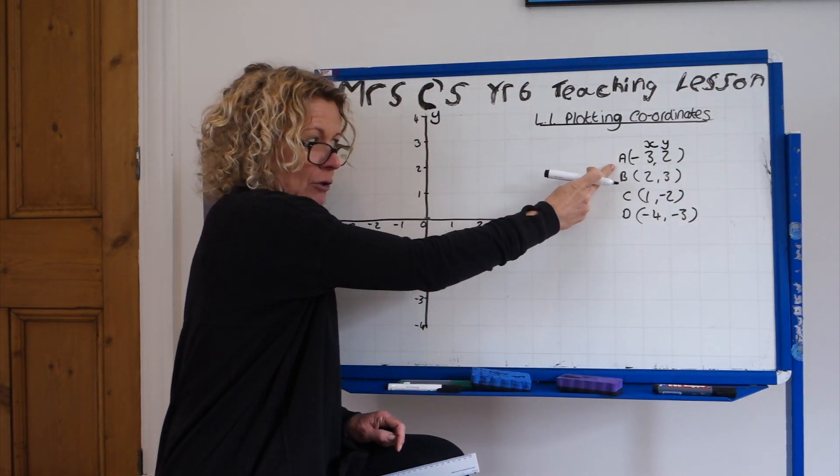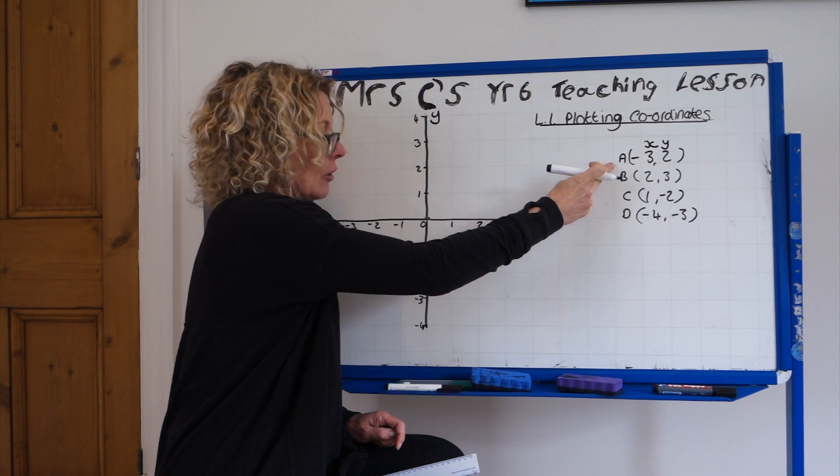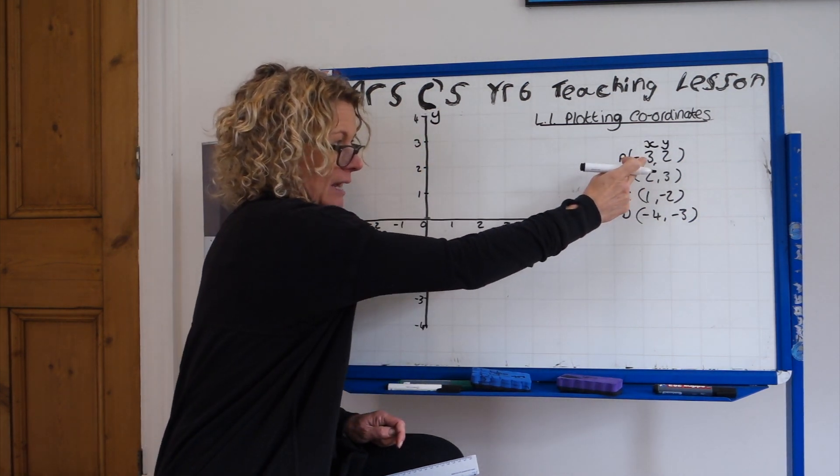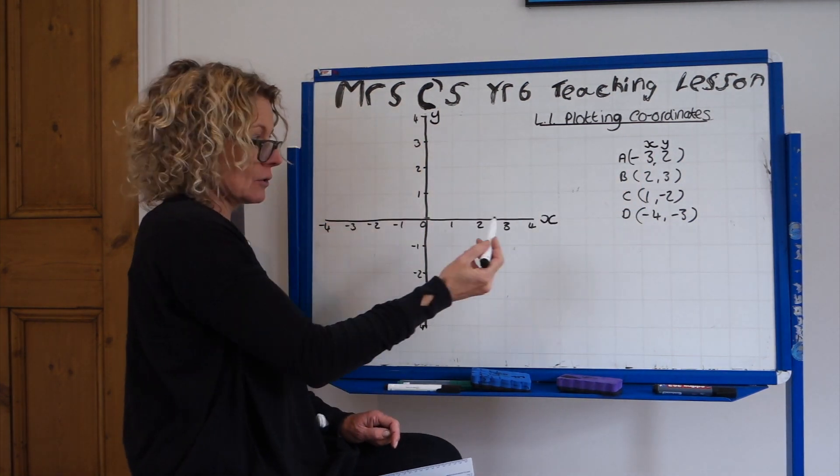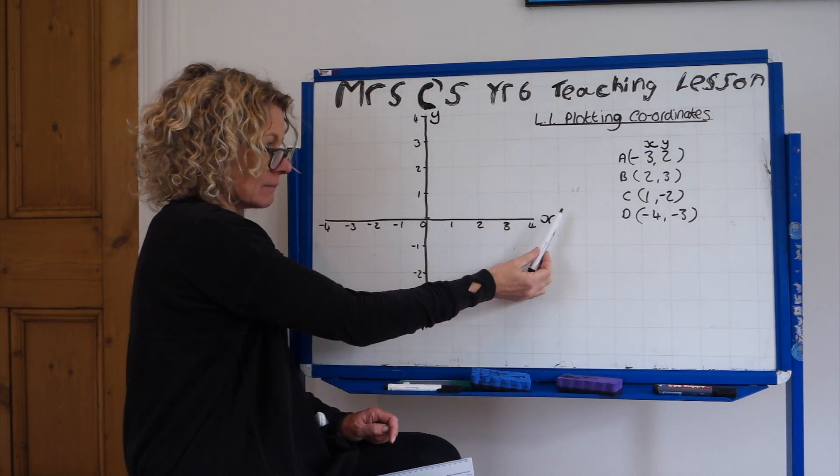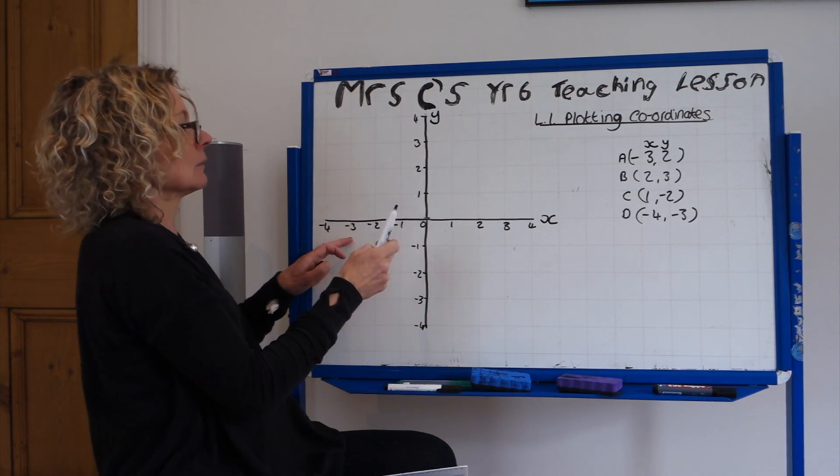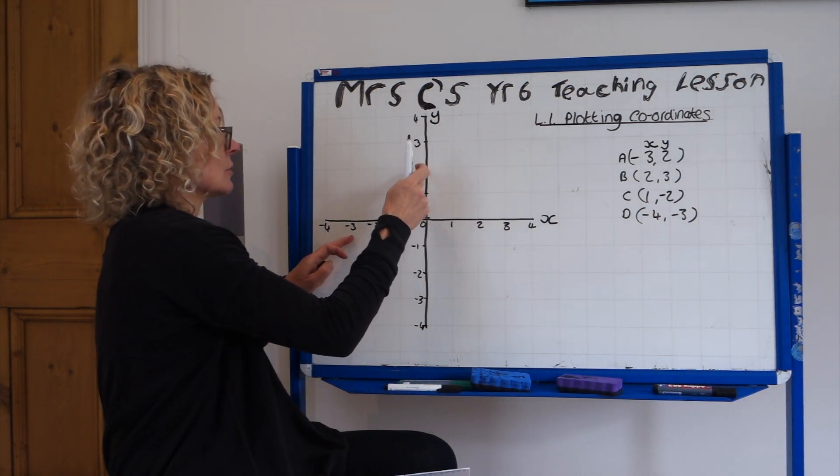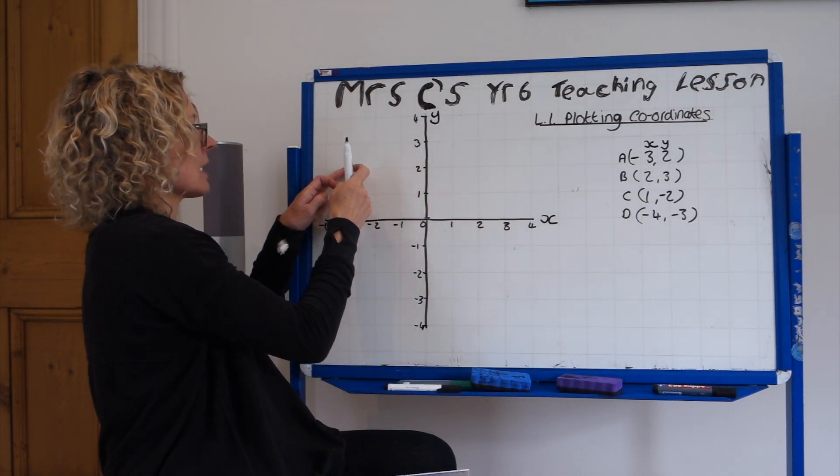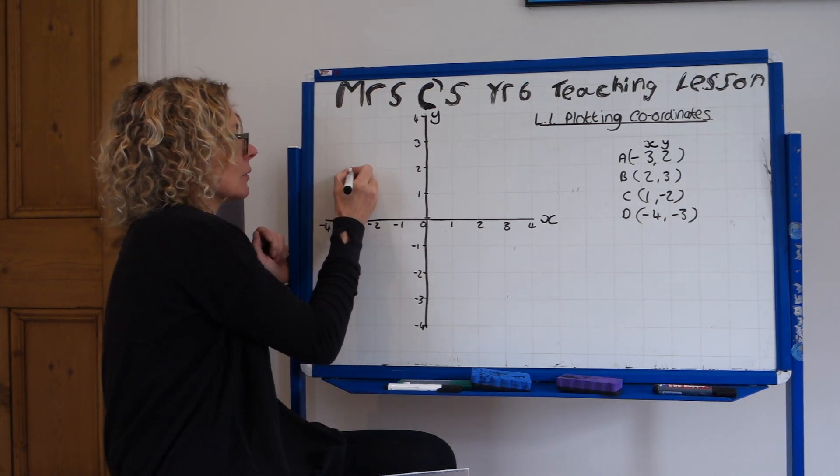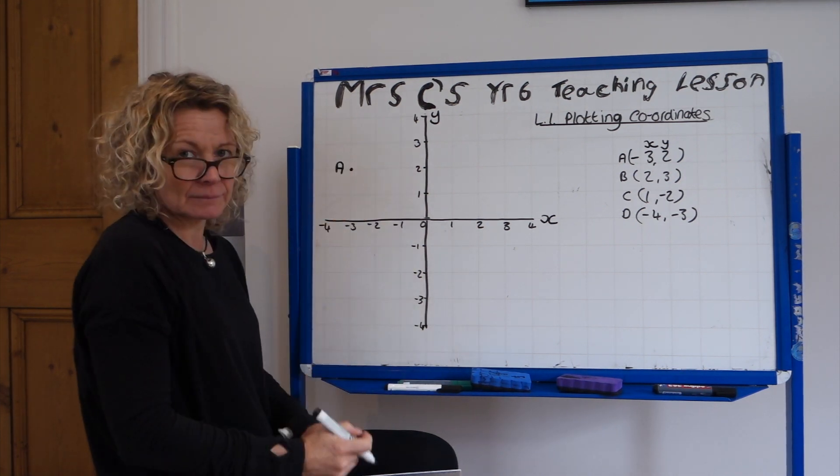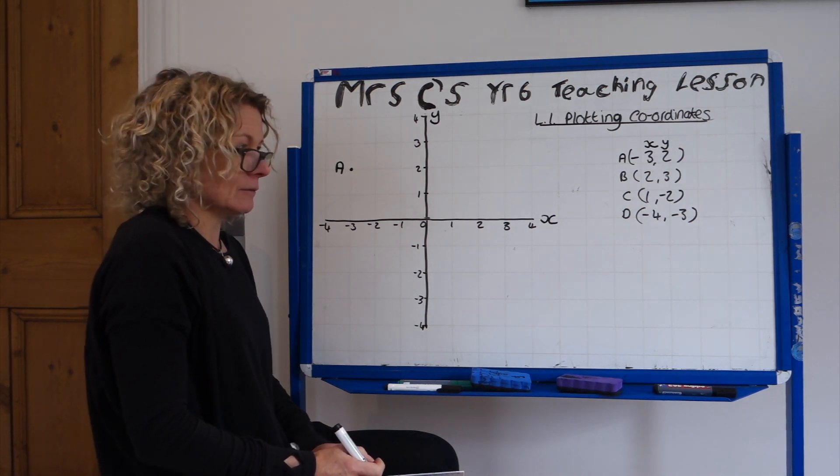So if we are going to plot A on our quadrant grid, we need to go to x then y. So we go in through the hallway to minus 3 on the x-axis and then y is 2. So can you do that on yours and plot point A. Got it?